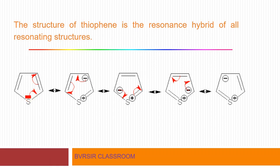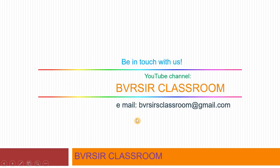In thiophene, the sulfur atom has an electron pair that undergoes charge transfer, generating different resonating structures — second, third, and so on. These are the resonating structures of pyrrole, furan, and thiophene. Practicing writing these resonating structures is very important, especially for competitive exams.